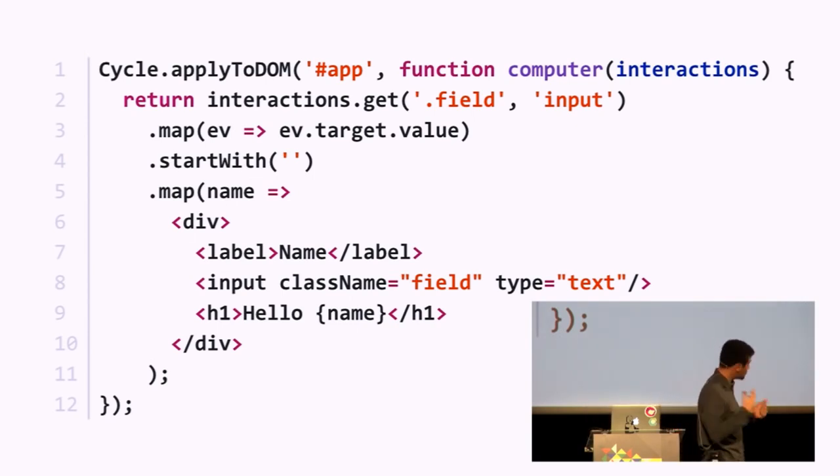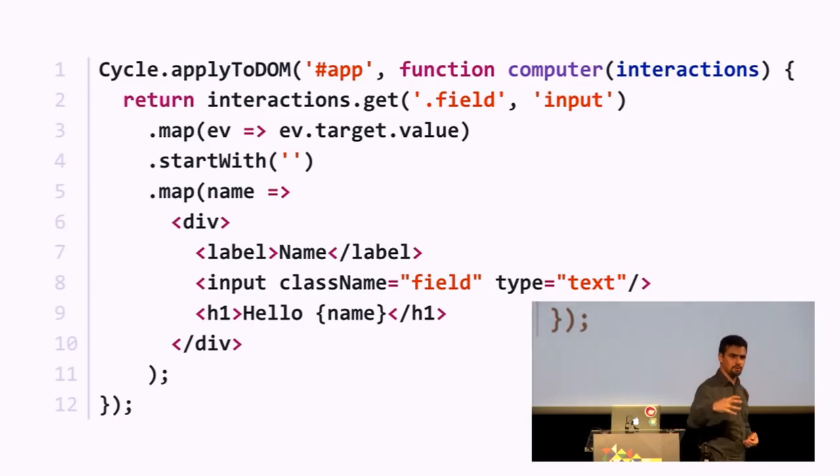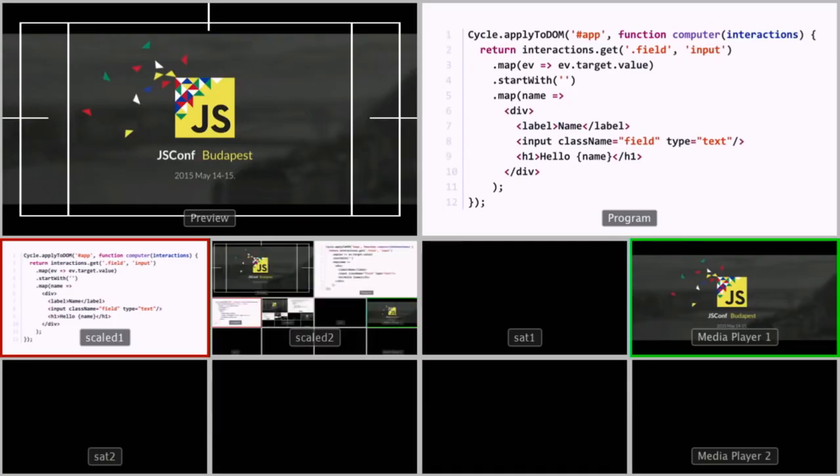Literally what the computer does is translate from keyboard to screen — you can clearly see that in this function. It gets interaction events from the keyboard and generates the screen. We can refactor this computer function into smaller functions: composition of intent, model, and view.